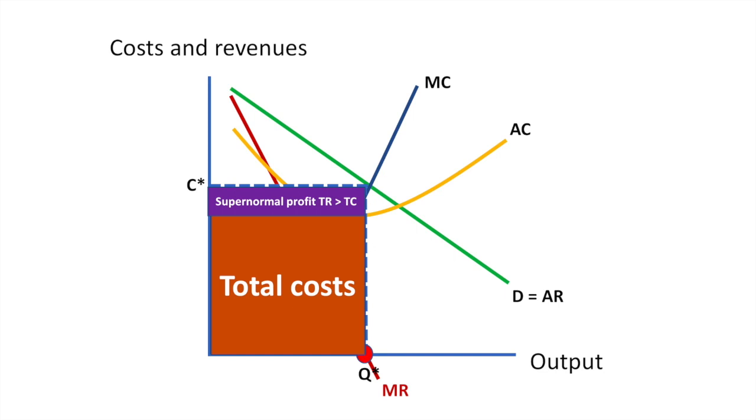While the firm is still earning supernormal profit, it is not earning the maximum profit possible. Again, it is important to draw your attention to the lower price and higher quantity of output as compared to a strategy of profit maximization.